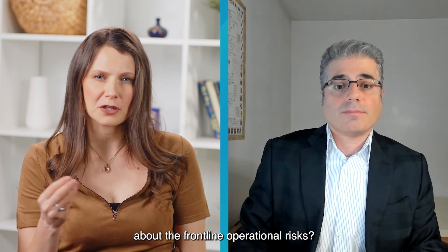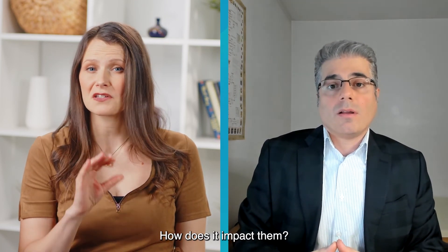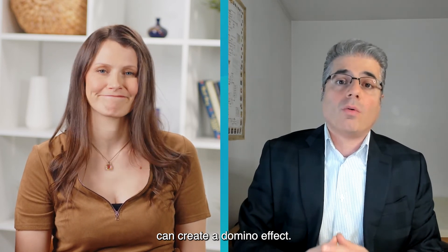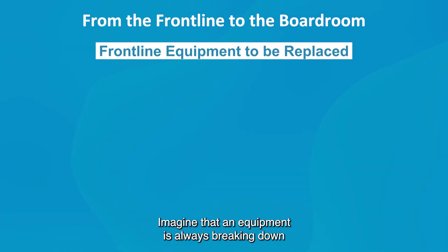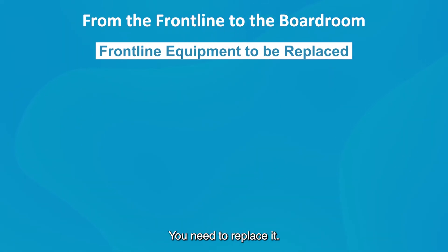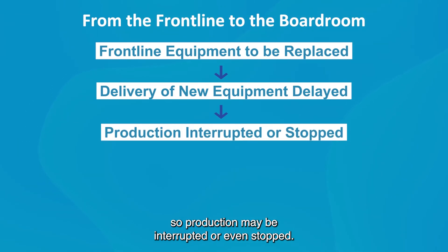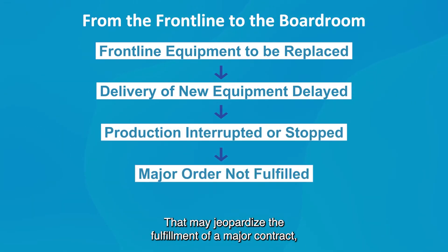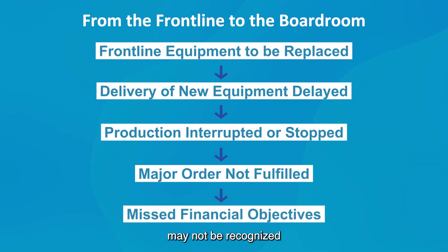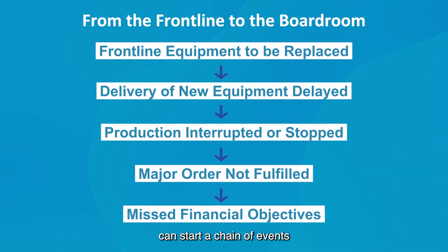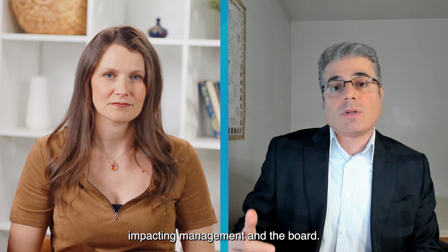But why would the C-suite care about frontline operational risks? How does it impact them? Frontline operational risks can create a domino effect. Imagine that equipment is always breaking down and slowing production — you need to replace it, but there's a four-month delay to get the new equipment, so production may be interrupted or even stopped. That may jeopardize the fulfillment of a major contract, which means that anticipated revenues may not be recognized in the current fiscal year. Financial objectives are missed and the board of directors is really not happy. We see how a problem with equipment at the frontline can start a chain of events impacting management and the board.